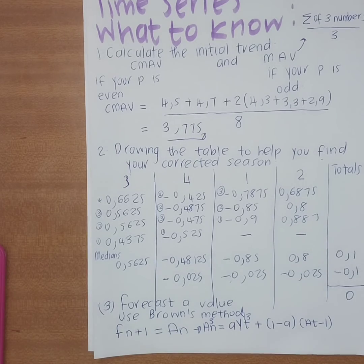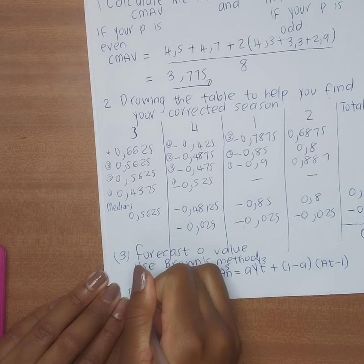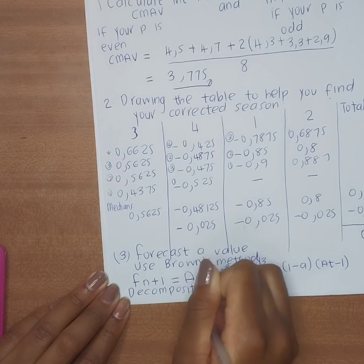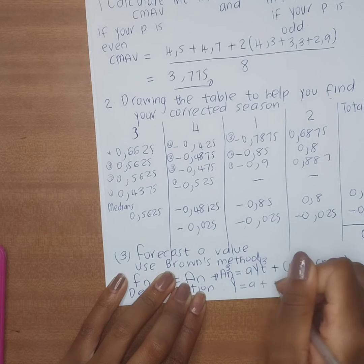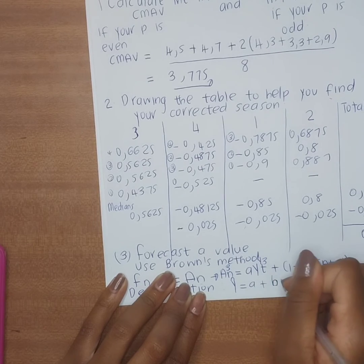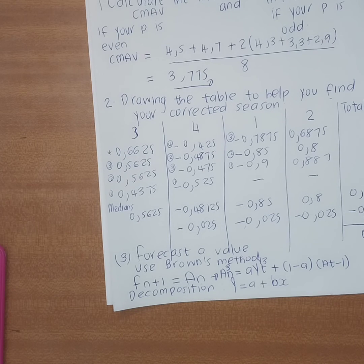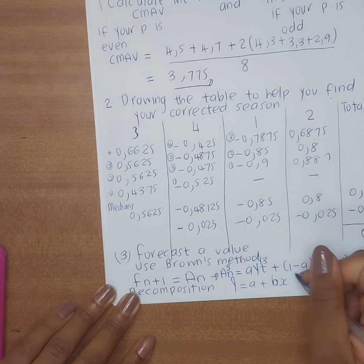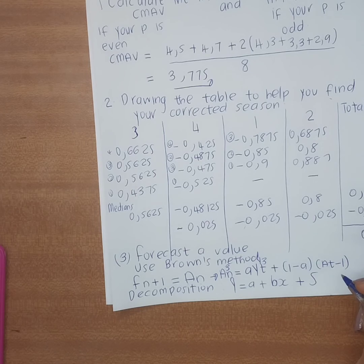For decomposition, you can predict outside the data range using the regression formula: y = a + bx (or a + b·n), whatever formula is given. If not provided, use your de-seasonalized data to find it via regression. Look at my other videos on regression for how to use the calculator.